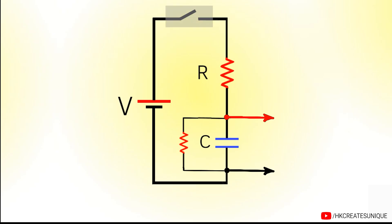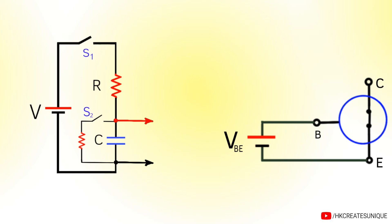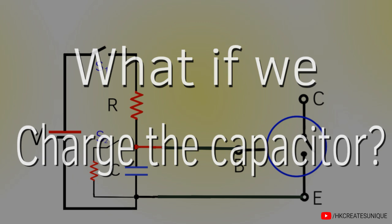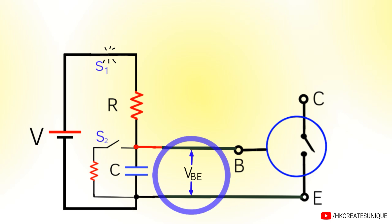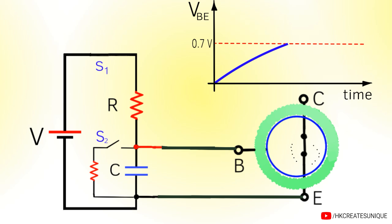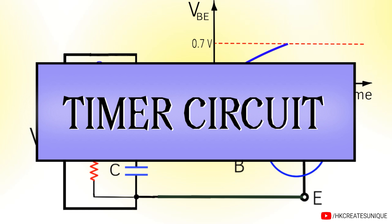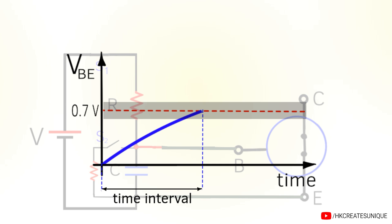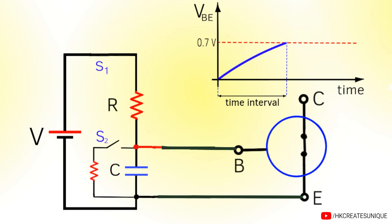Let's name the charging switch S1 and the discharging switch S2. Now here comes the fun part. Let's connect the wires across the capacitor to the base and emitter terminals of the transistor. As charging switch S1 is turned ON, voltage across base and emitter will rise slowly. As the voltage across the capacitor reaches the threshold voltage of the transistor, the transistor turns ON. So we successfully built a timer circuit. The time interval is the time taken by the capacitor to reach 0.7V, and this time can be set by using different values of R and C.